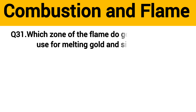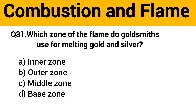Question number 31: Which zone of the flame do goldsmiths use for melting gold and silver? The right answer is option B: Outer zone.